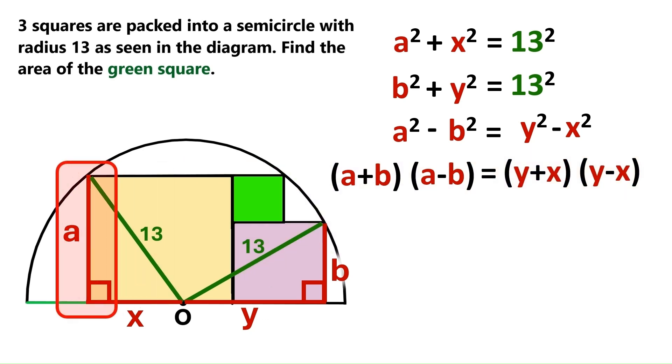Now a is the side of the cream colored square, so this side must also be a. And b is the side of this purple gray square, so this side is also b. It is obvious that a plus b equals x plus y.